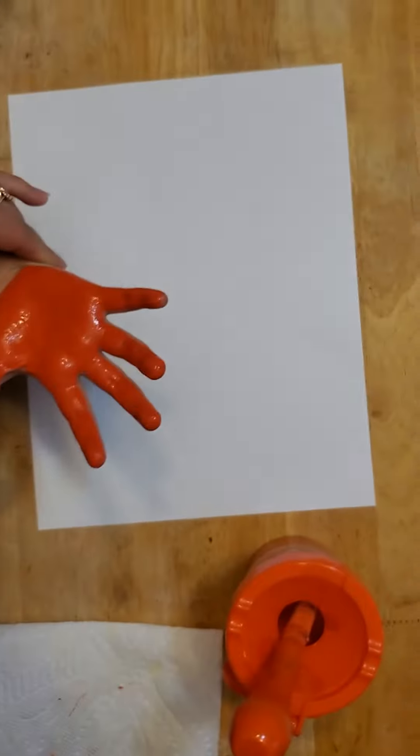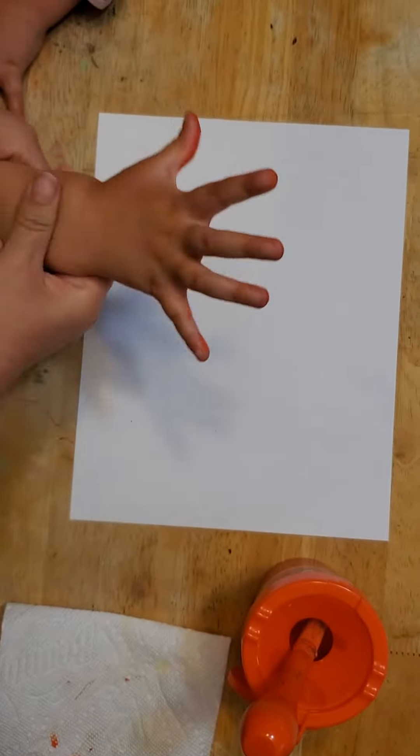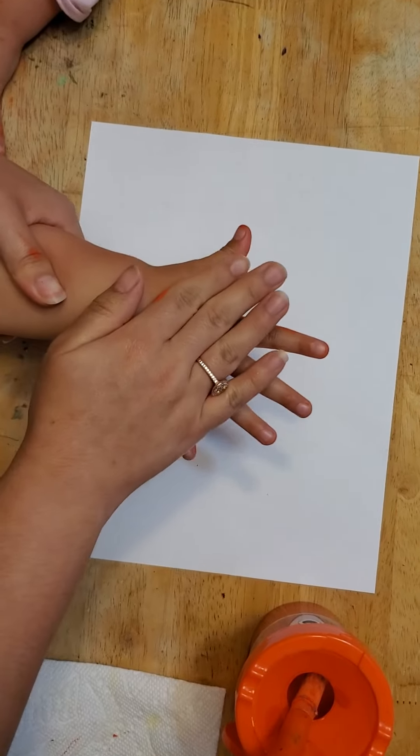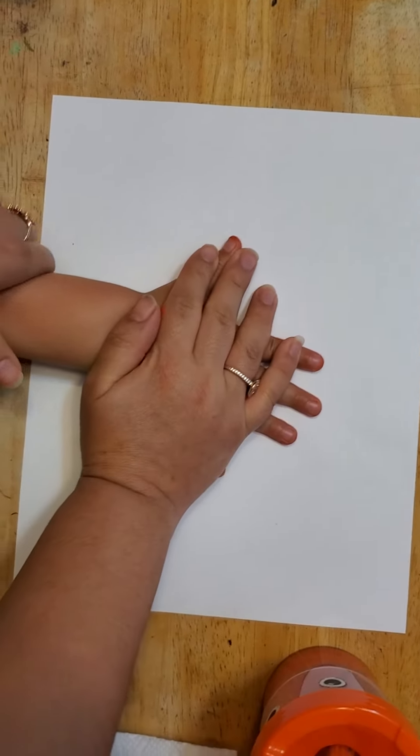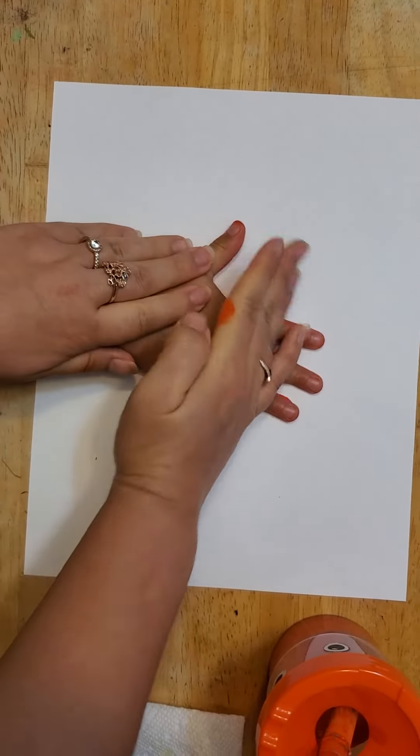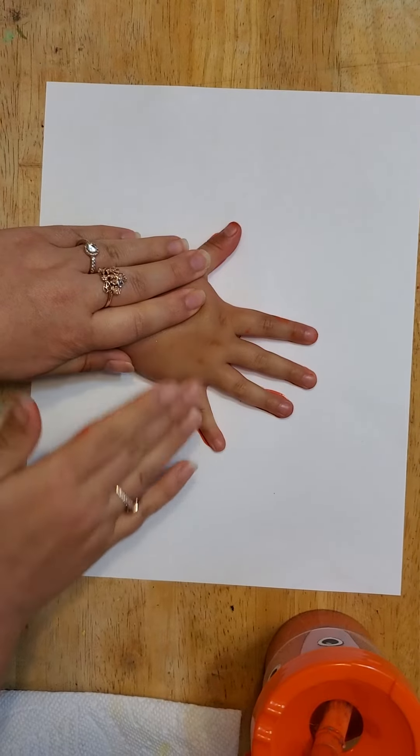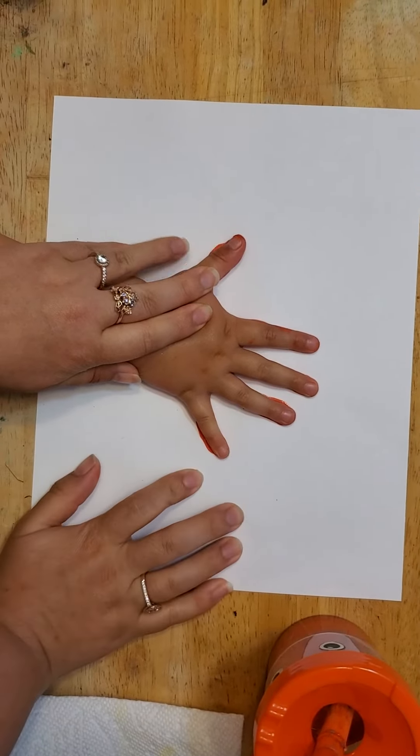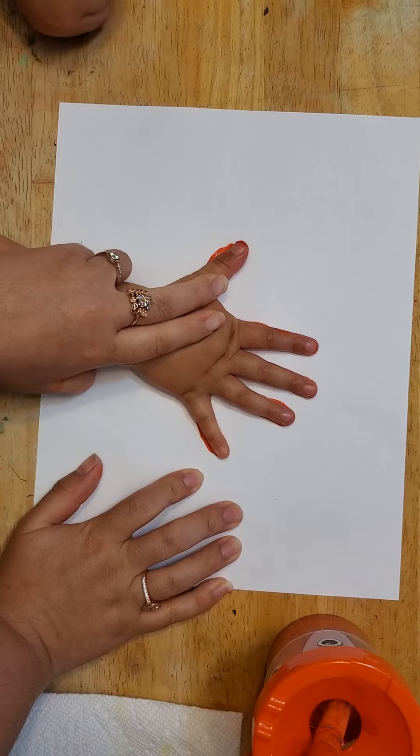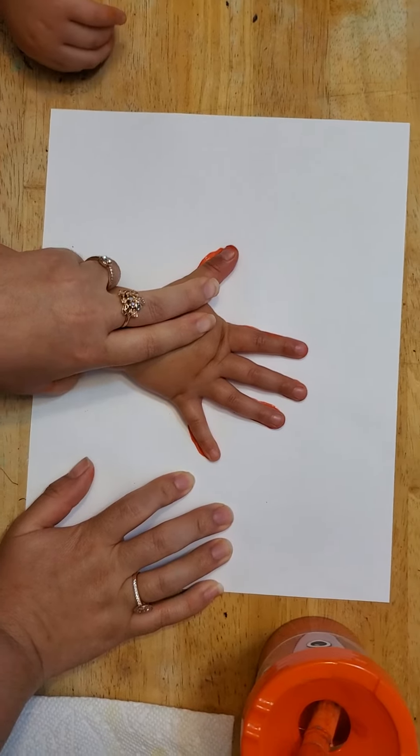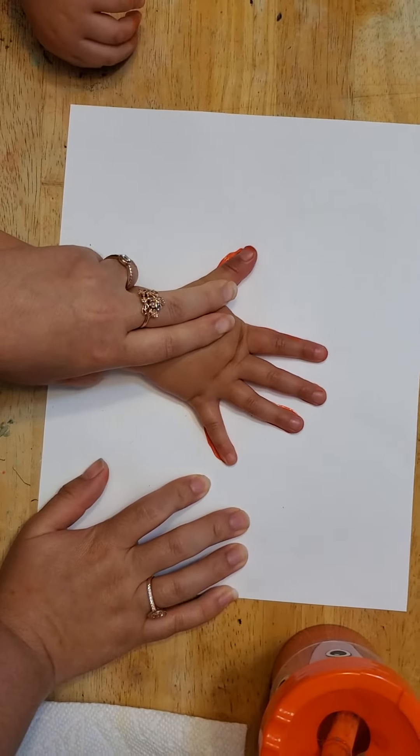You want to make sure that the hand stays open. You're going to place it firmly down with your hand on top. Just press it down. Make sure you get it there. Then with one hand, I'm going to hold the paper, and with the other hand, I'm going to move the hand directly off vertically. I'm just going to move it up.